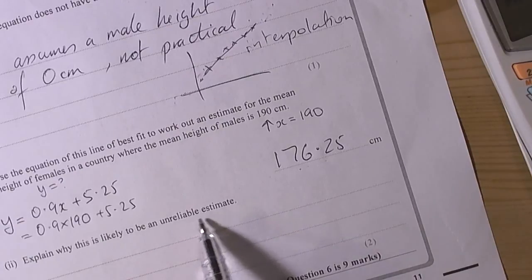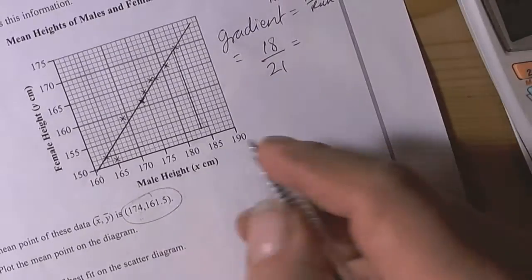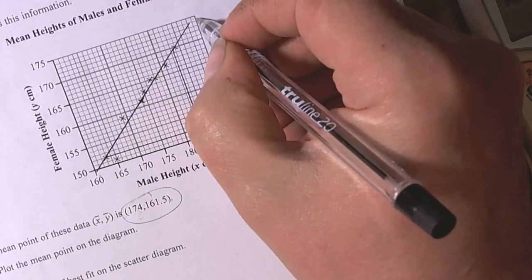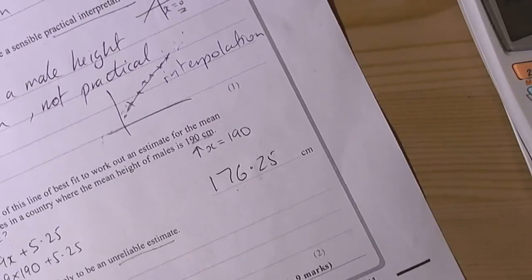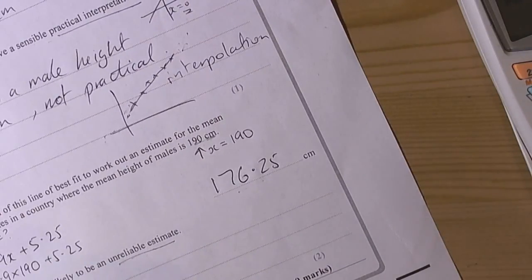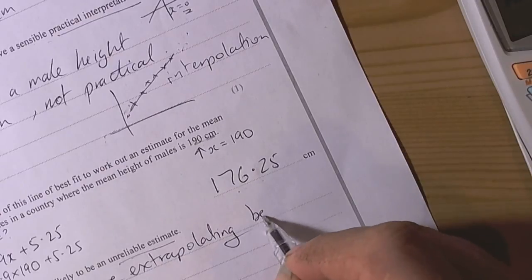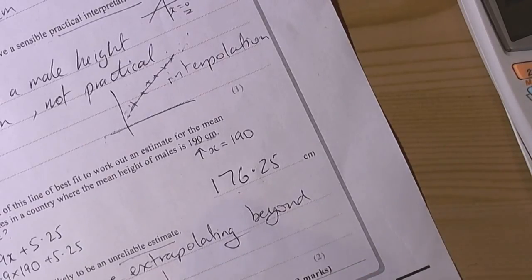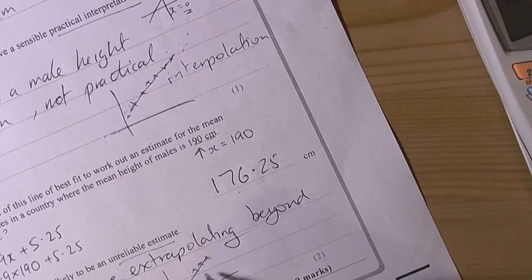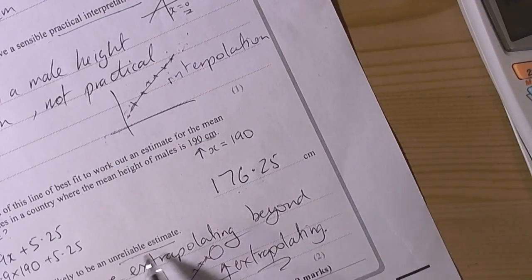Explain why this is likely to be an unreliable estimate. Let's look at the graph and see where the 190 is. Well, the 190 is at the extreme of the graph that's been given and it's beyond the actual data we've been given. So we're doing what's called extrapolating. Classic question - explain why this is likely to be an unreliable estimate. Literally we're going to say because we are extrapolating beyond the given data. The crosses were given - inside would be interpolating, we're going beyond so we're extrapolating, which is not as reliable as interpolation.